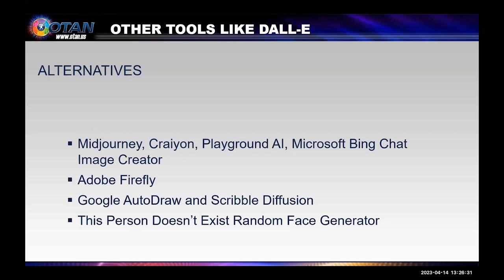There are several alternatives to DALL-E. Perhaps you've heard of Midjourney. Other image creators are Craiyon, Playground AI, and Bing Chat, all of which are text to image. For Adobe account holders, Adobe Firefly is in beta and allows text to sketch, text to image, or text to vector image, and more. With Playground AI, users select the character, location, and activity to get an image. Google AutoDraw and Scribble Diffusion transform drawings to images. And 'This Person Doesn't Exist' is a random face generator that provides better images of people with options for choosing gender, age, and ethnicity.